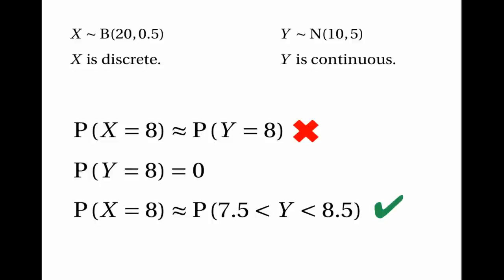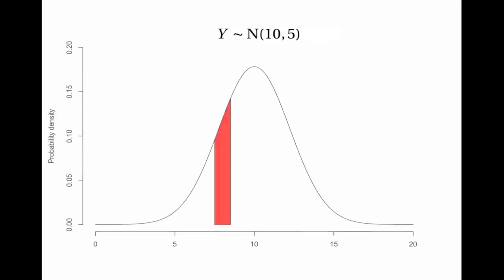Instead, if we want to find the probability that x equals 8, we say it's about the same as the probability that y is between 7.5 and 8.5. This technique is known as making a continuity correction. You can see this is plausible because the area under the probability density function curve between 7.5 and 8.5 corresponds approximately to the probability that x equals 8.